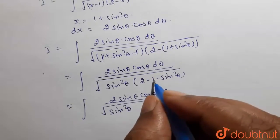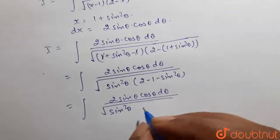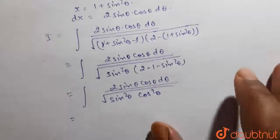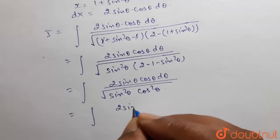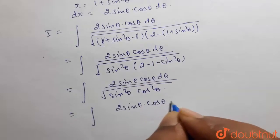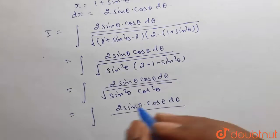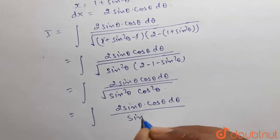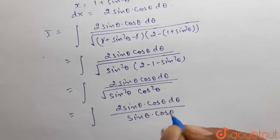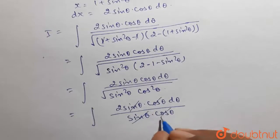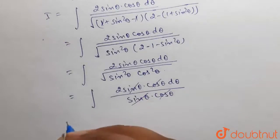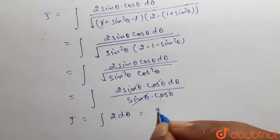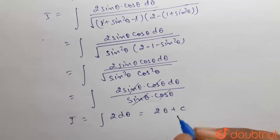Now, 2 minus 1 is 1 and 1 minus sin square theta is cos square theta. So, it will be cos square theta. So, I will be equal to integration of 2 sin theta into cos theta divided by — square root of sin square theta into cos square theta will be sin theta into cos theta. Now, sin theta will cancel out and cos theta will also cancel out. So, I will be equal to integration of 2 d theta, which is equal to 2 theta plus C.